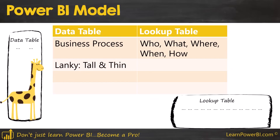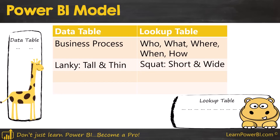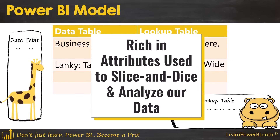Data tables don't have that many columns — they're not supposed to be very wide. On the other hand, lookup tables are squat — they're short and they're wide. Think hippos. If you have a million sales transactions, we're not going to have a million customers or a million products. Maybe we'll have a few thousand customers and a few hundred products. They don't grow as fast, but they can be wide — rich in attributes which we can use to slice and dice the data, giving them a lot of columns.